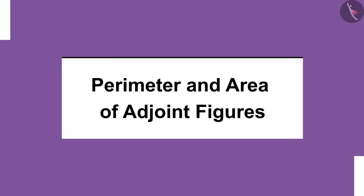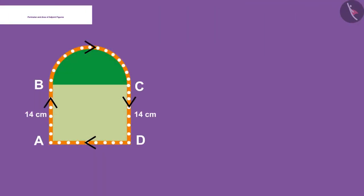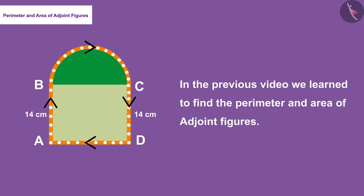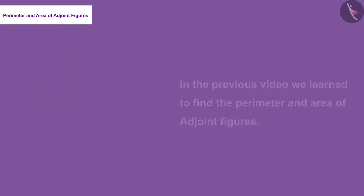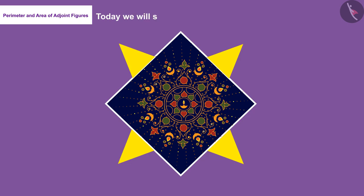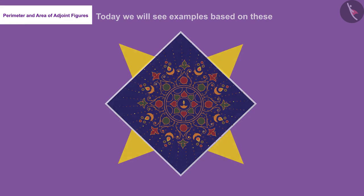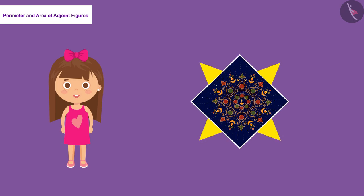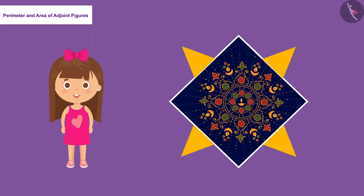Welcome all of you to this video. In the previous video we learned how to find the perimeter and area of adjoined figures. Today we will see examples based on these. This is Mohini — she wants to make a rangoli.